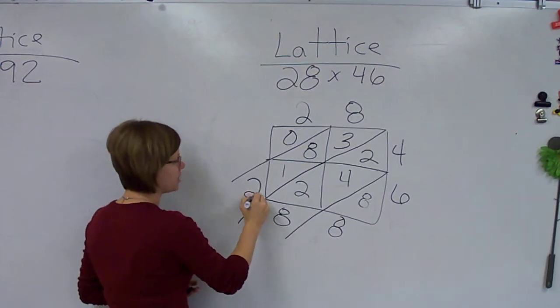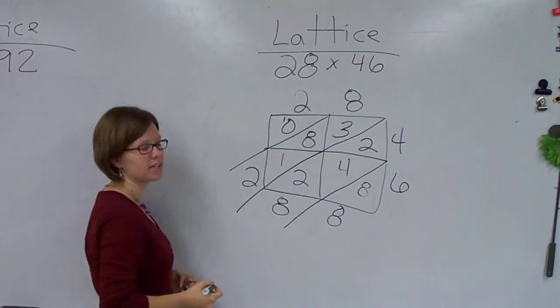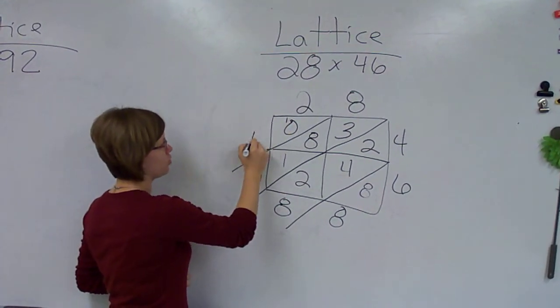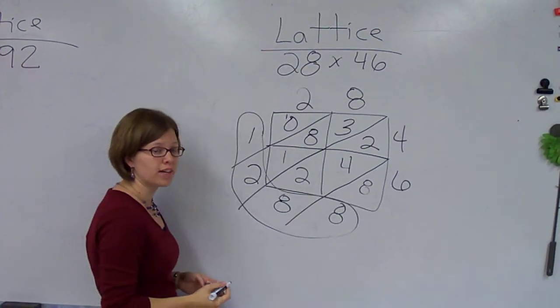Now here, I put my 1s place down, so I'm going to put my 2 down from 12, and then I have to carry my 1 for my 10s place. Then I have 1 plus 0, which is 1. So my answer here is going to be 1,288.